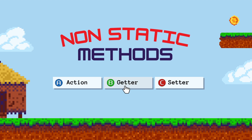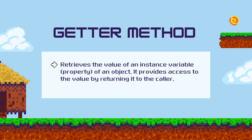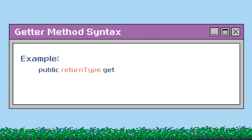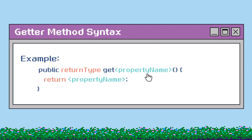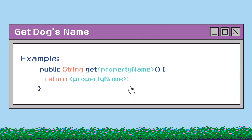Next up are getter methods. A getter method is like a helper that gets information for us — it's used to get the value of the object's properties. It lets us access the object's hidden data without changing it directly. It follows the pattern: get followed by the property name, and inside the method you simply return the value of the property using the return keyword. Let's write a getter method to access our dog object's name. The name data type is String, so our return type will be String. We'll call the method getName and simply return the name.